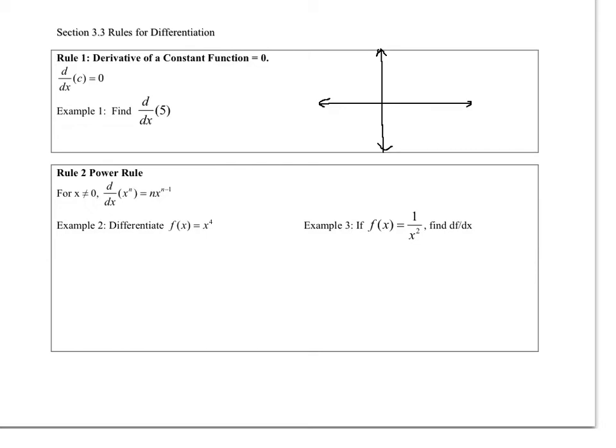So the first rule is the derivative of a constant function equals 0. d/dx of a constant equals 0. Here's example 1: Find the derivative of 5, where 5 represents a function. If this is the line y equals 5, d/dx stands for derivative. What is the slope of that line? Well, the slope the entire time is 0, so that answer will always be 0. It's our favorite rule ever.